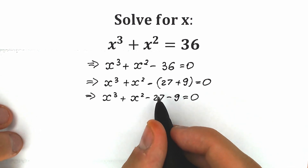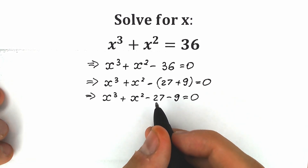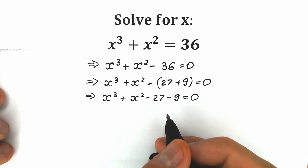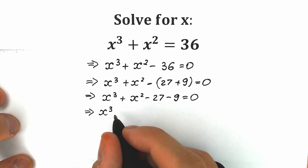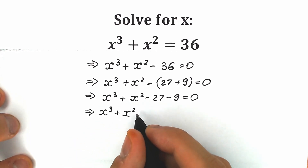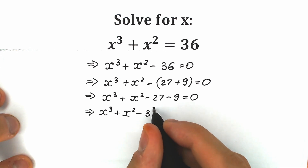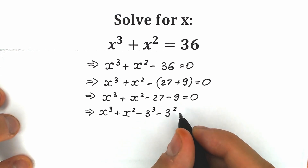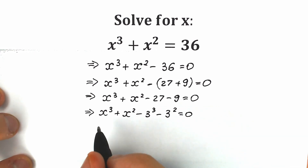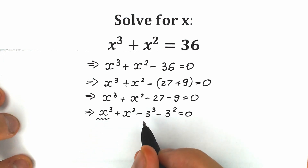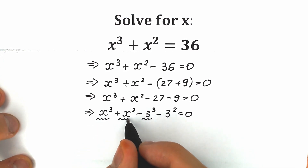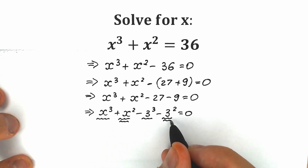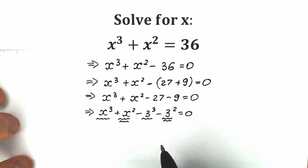Now we note that 27 = 3³ and 9 = 3². This helps us a lot. So we rewrite as x³ + x² - 3³ - 3² = 0. We can see that we have two expressions with the third power (x³ and 3³) and two expressions with the second power (x² and 3²).